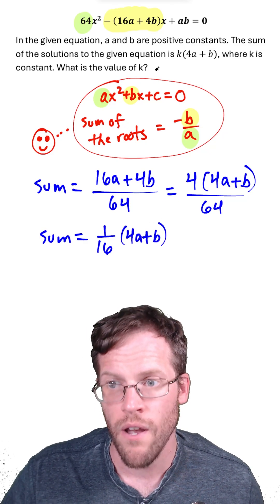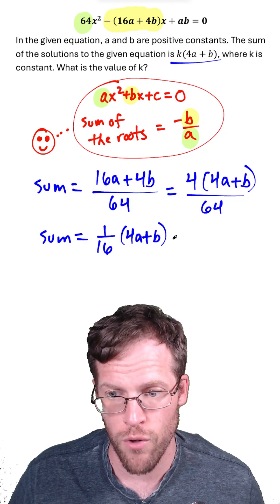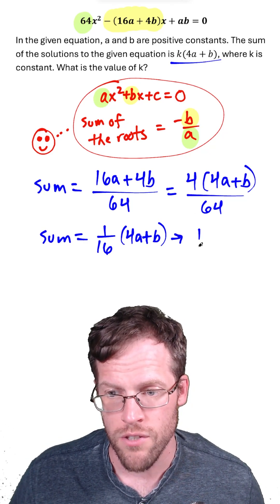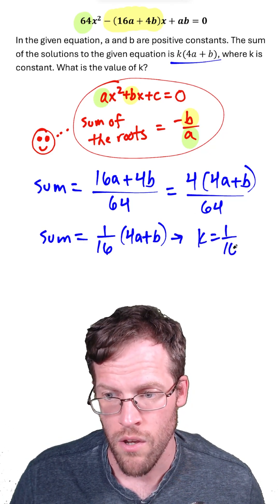So now when we look at the sum of the roots, the sum of the roots is k times 4a plus b. k is the coefficient of the factor, so in this case k equals 1 over 16.